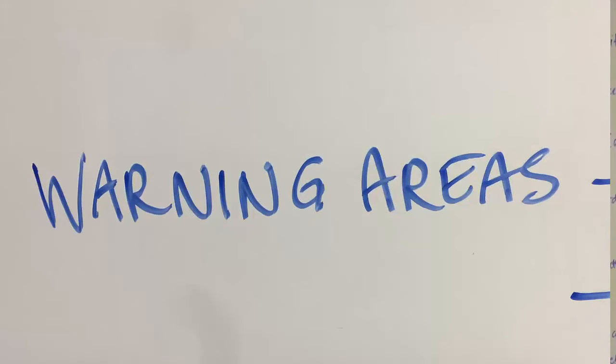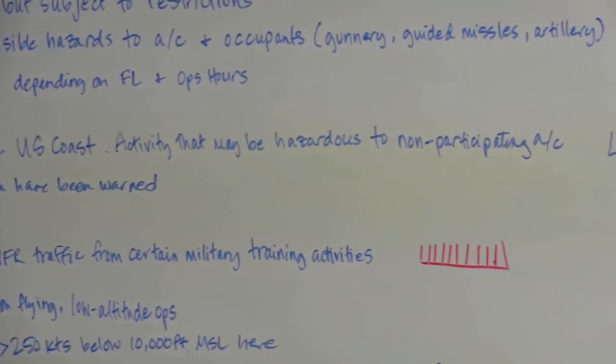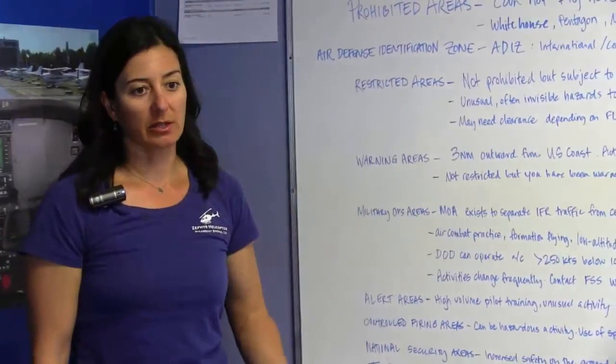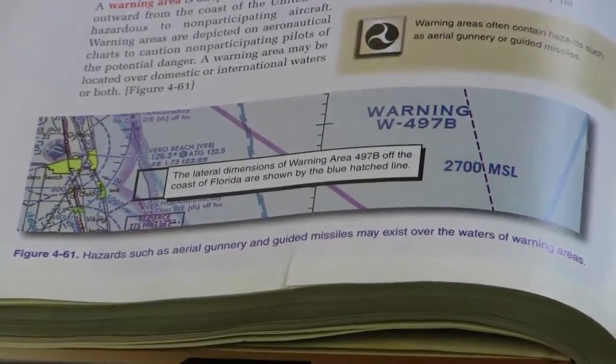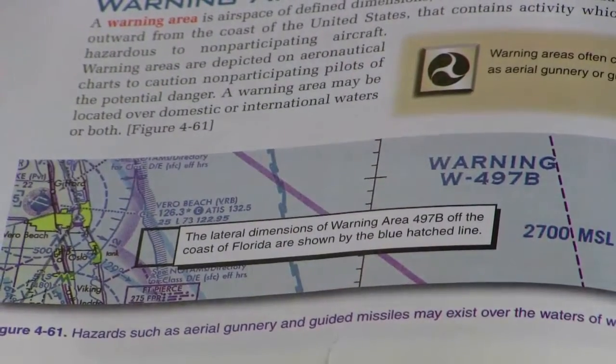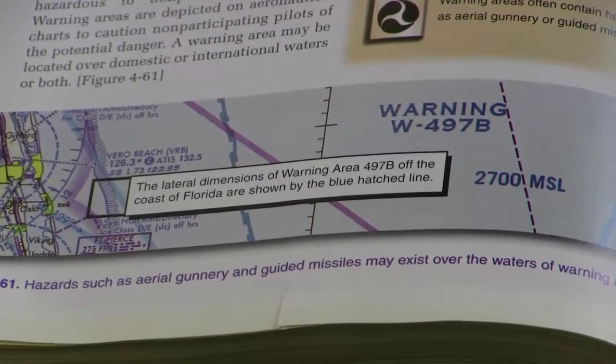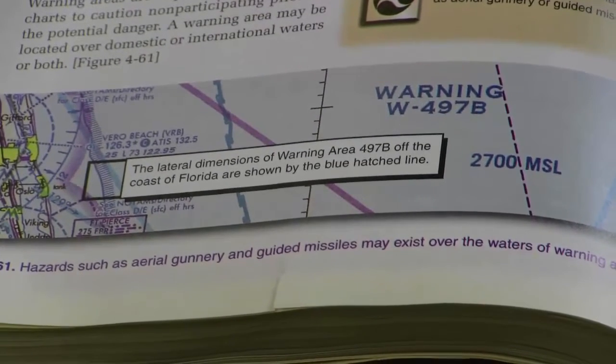Next are warning areas. These areas are three nautical miles outward from the United States coast and contain activity that may be hazardous to non-participating aircraft. It's not a restricted or prohibited area, but you have been warned that there may be some activities going on that you don't want to be a part of. It will be depicted on a sectional with a blue crosshatch line and a corresponding number in the legend. You can also contact the closest flight service station within 100 miles for information.